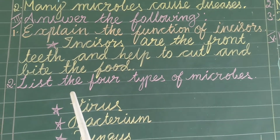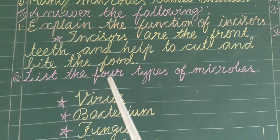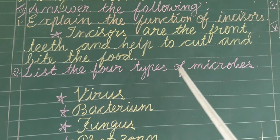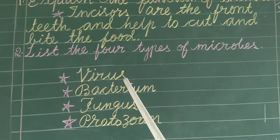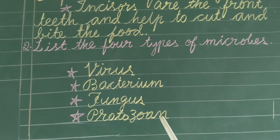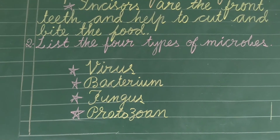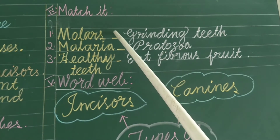Next question: list the 4 types of microbes. Virus, bacterium, fungus, protozole and magic.